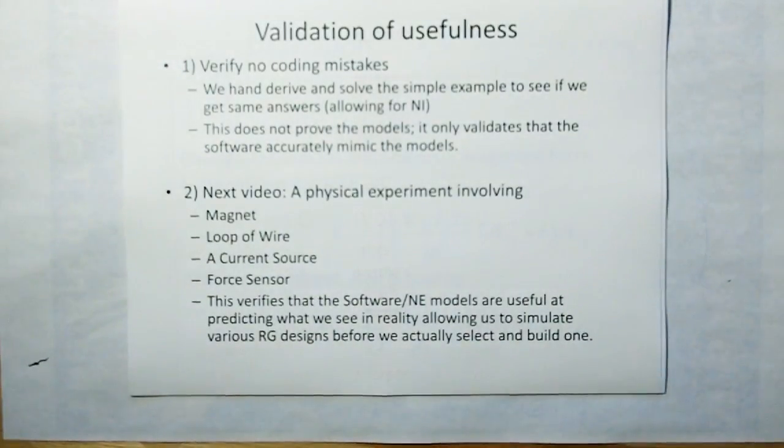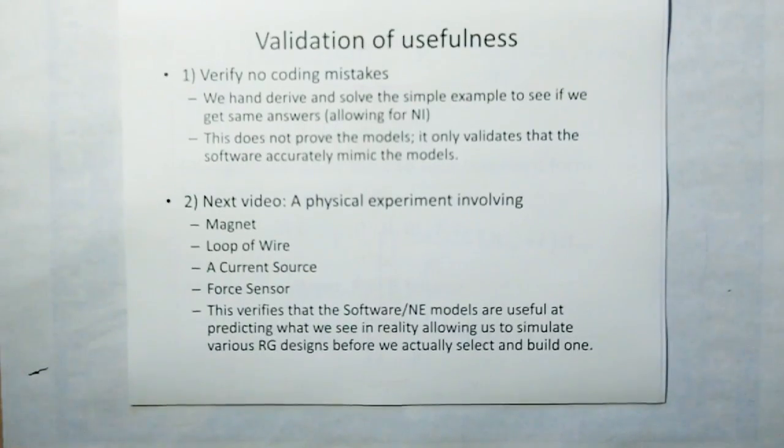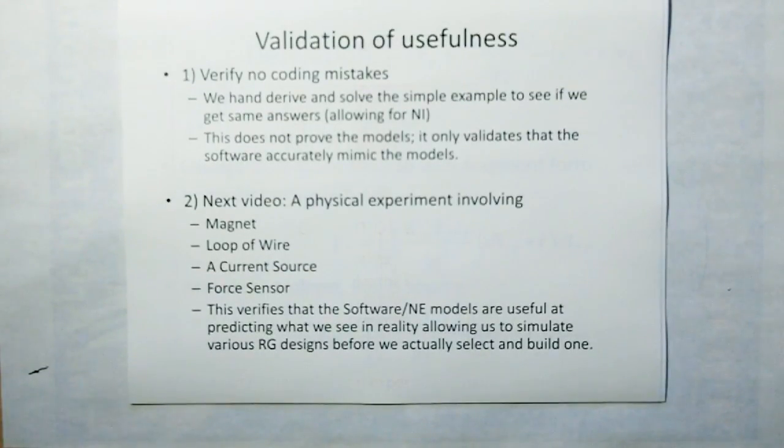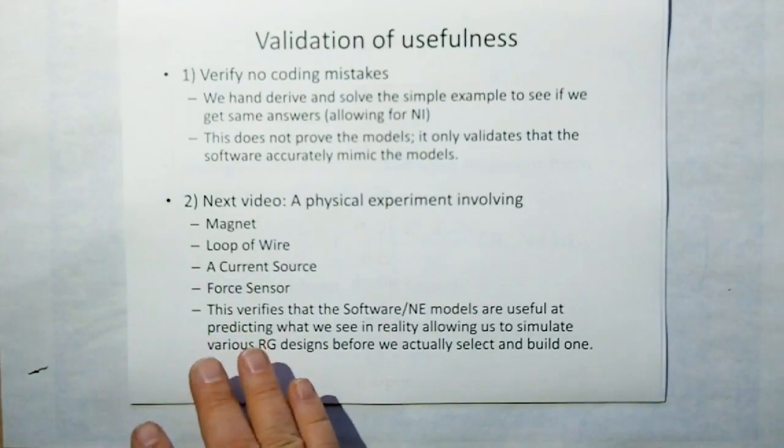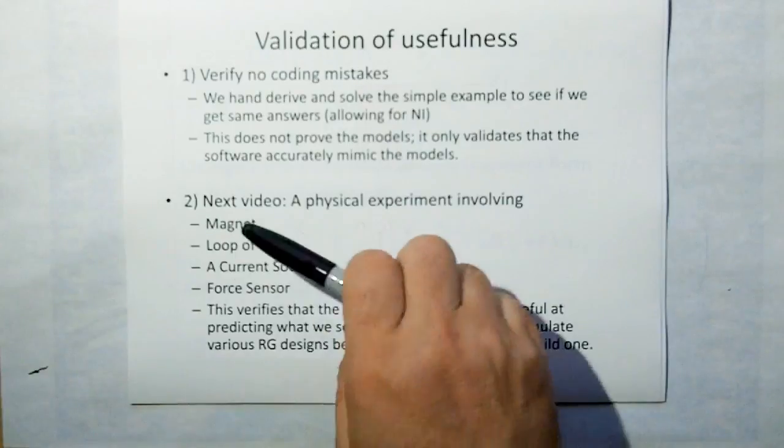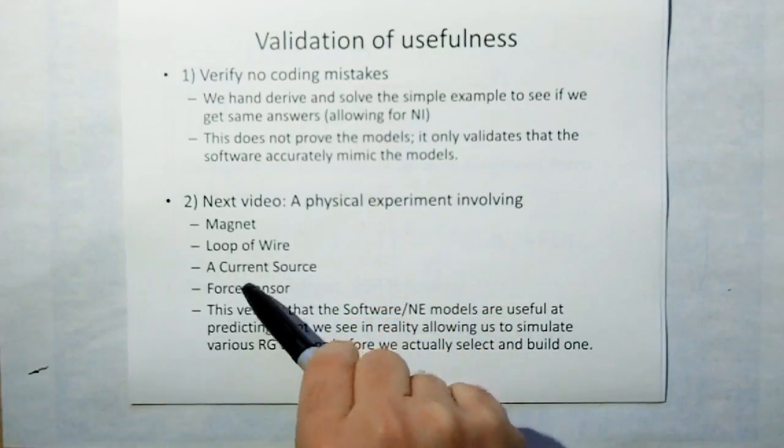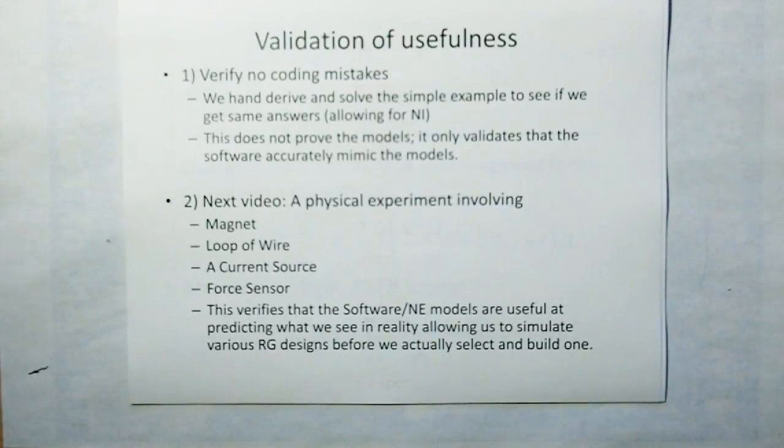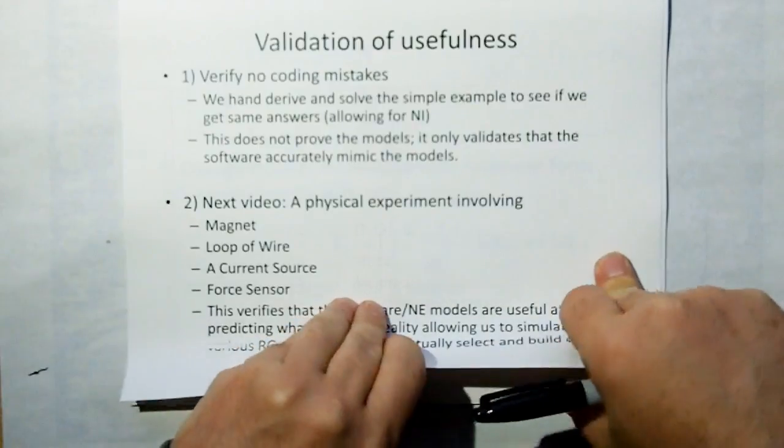We have to validate that answer is correct, making sure there's no error in the coding and that the numerical algorithms properly reflect new electromagnetism. The next video we're going to do a physical experiment involving actual magnet, loop of wire, current source and a force sensor. I'm still working on the force sensor, should be done in two weeks, and this tabletop experiment will validate the software, allowing us to simulate various railgun designs before we actually build it.